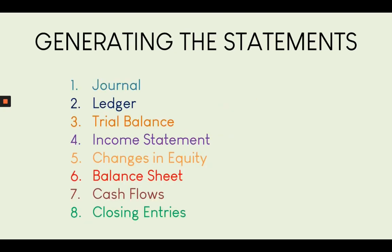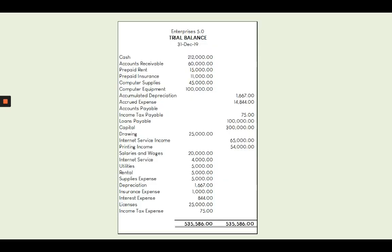The bookkeeping process includes journalizing, posting in the ledger, the trial balance, the income statement, changes in equity, the balance sheet, cash flows, and closing entries. Since this is a course in financial management, we will be focusing only on the generation of the income statements from the trial balance. We will not delve into journalization and posting of business transactions. For our discussion, we will be using a generated trial balance of Enterprises 5.0.